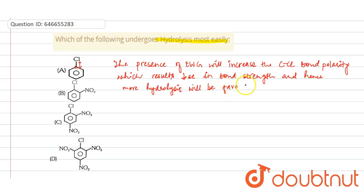Ultimately, maximum will be the number of electron withdrawing groups, maximum will be the hydrolysis. Hence here, the D option contains three electron withdrawing groups. Hence it will show maximum hydrolysis or easy hydrolysis.